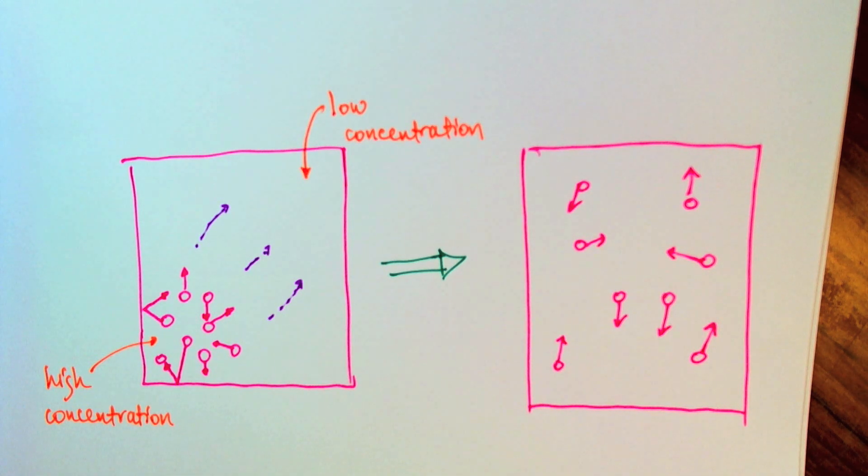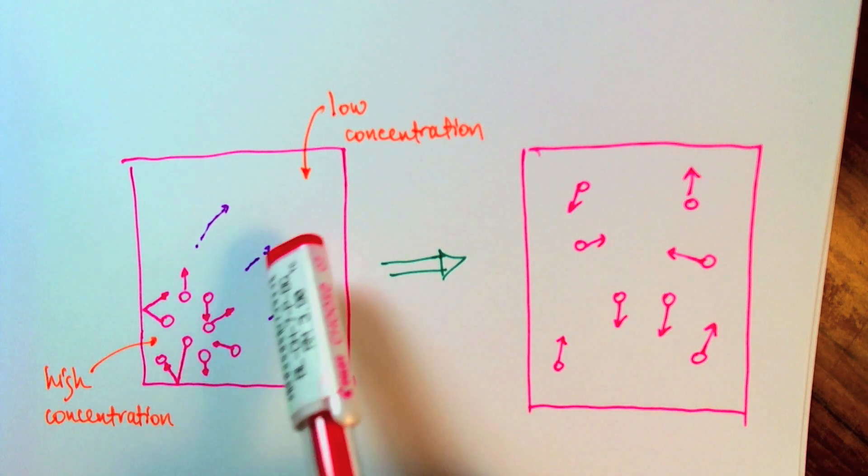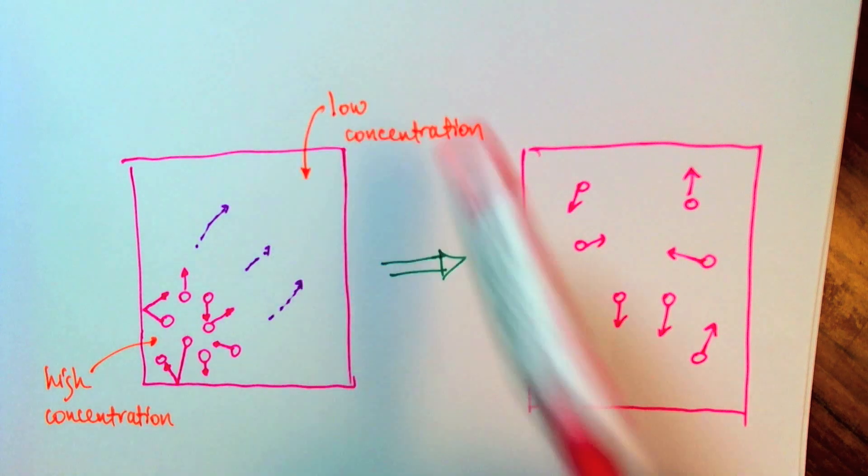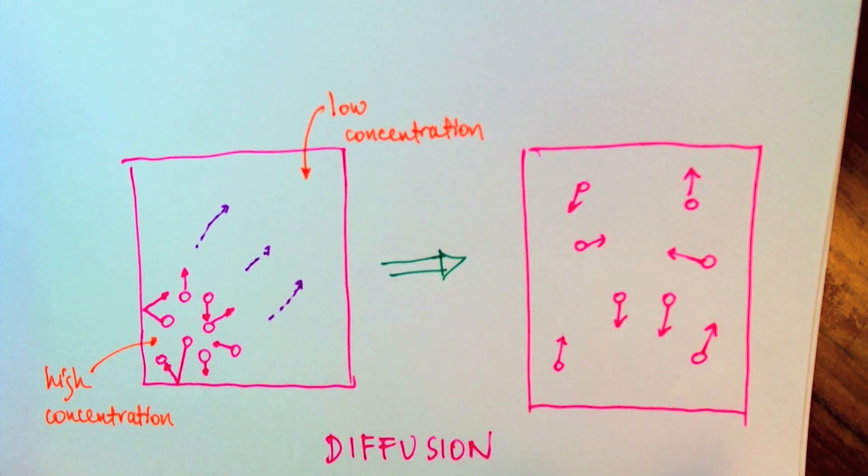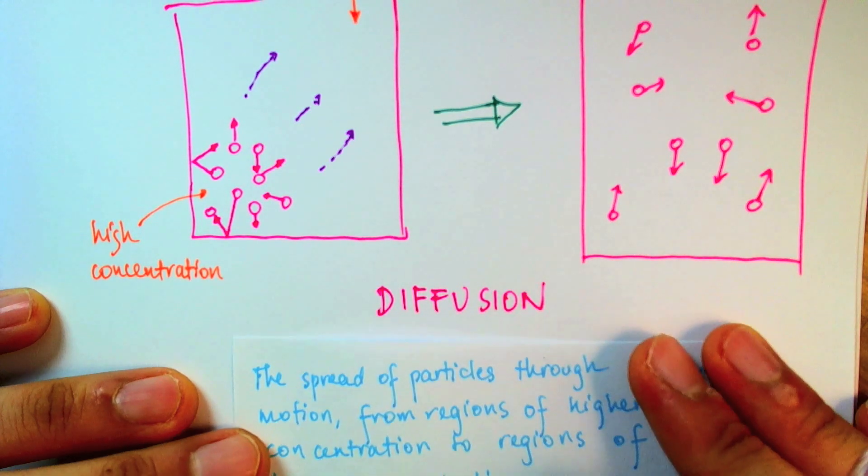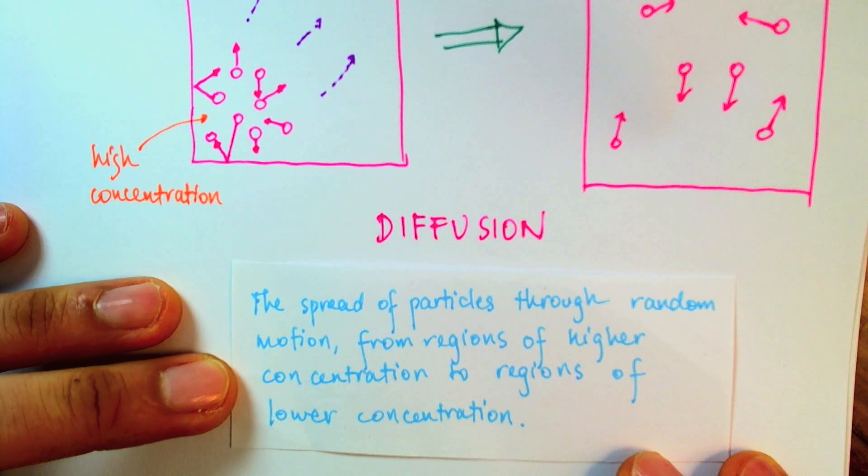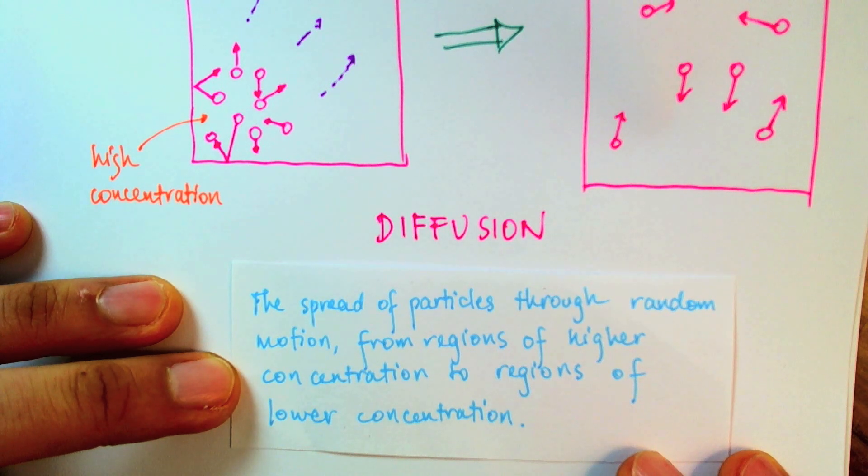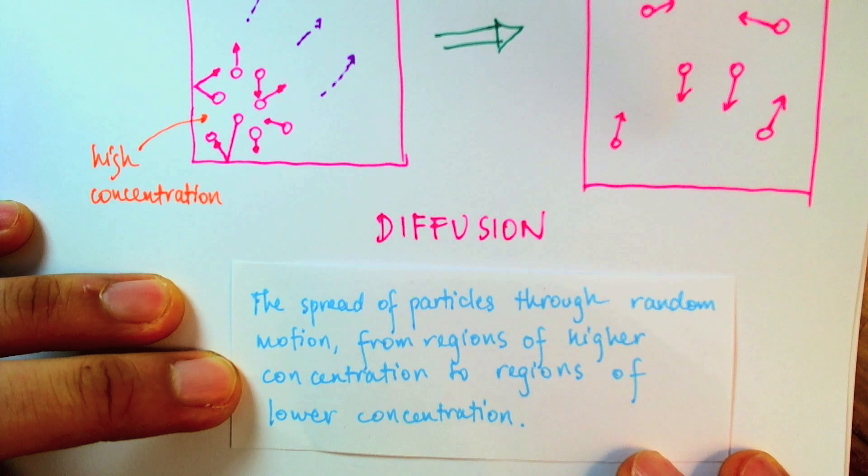So, there's a name given for this tendency of particles to want to spread out from an area where they are close together, namely an area of high concentration, to an area where there is less of them, namely an area of low concentration. And we call this diffusion. Here's the definition of diffusion from Wikipedia. It says that diffusion is the spread of particles through random motion from regions of higher concentration to regions of lower concentration.